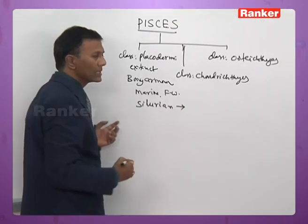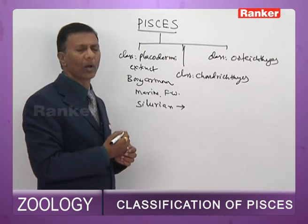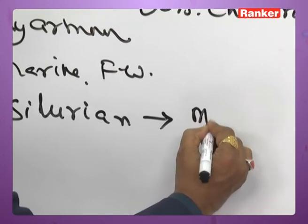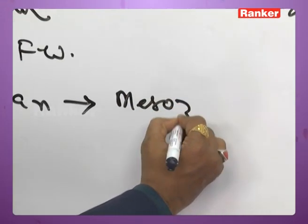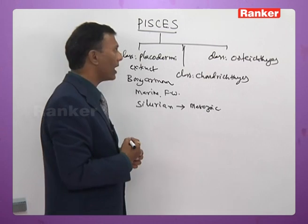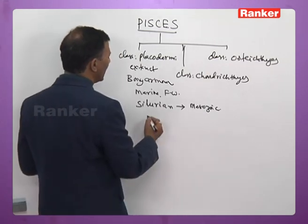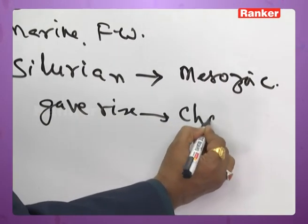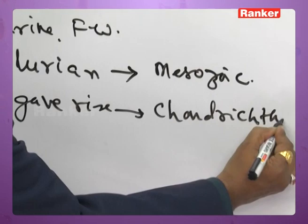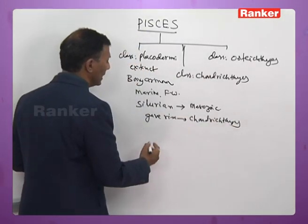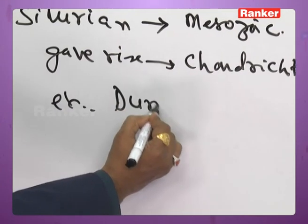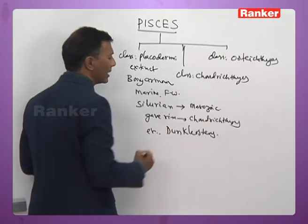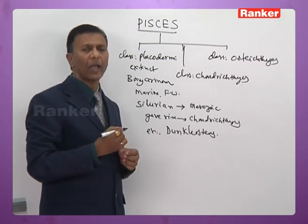The Placoderms evolved during the Silurian period, as did all other fish. They became extinct before the commencement of the Mesozoic era. The Placoderms gave rise to Chondrichthyes. The most important example for Placodermi is Dunkleosteus.